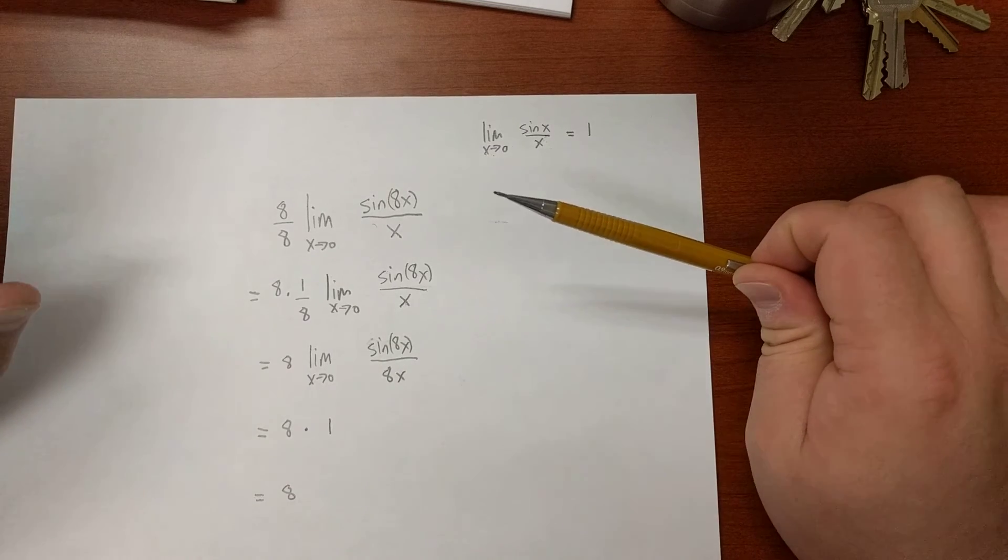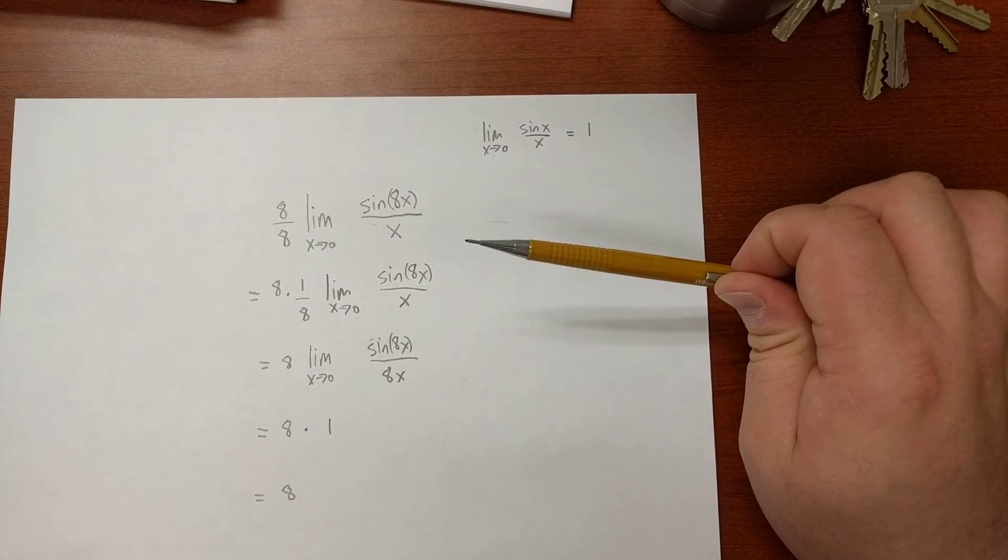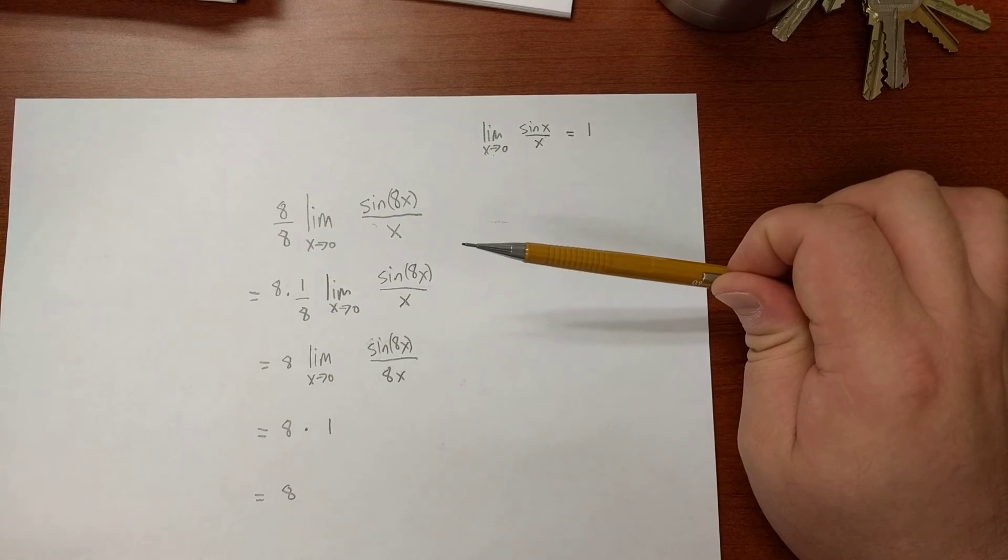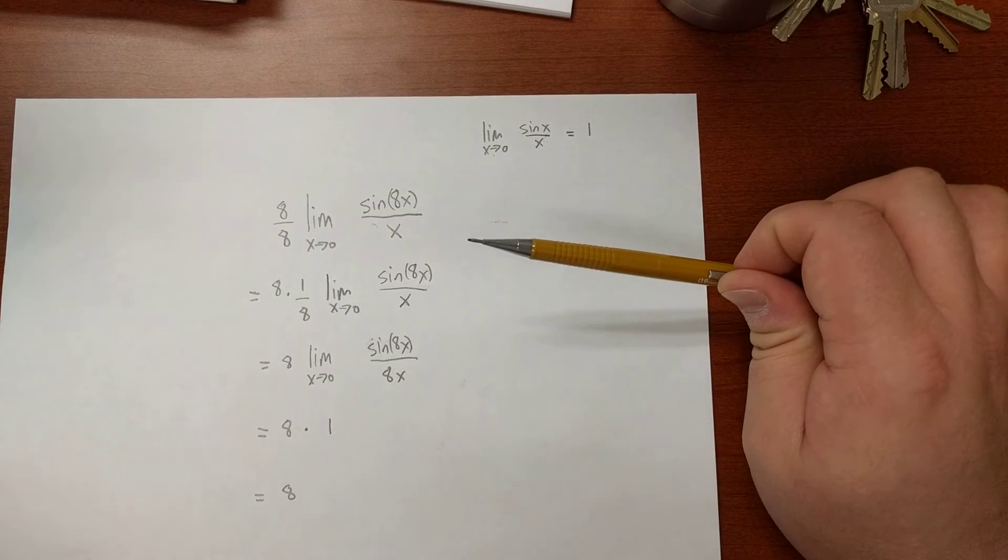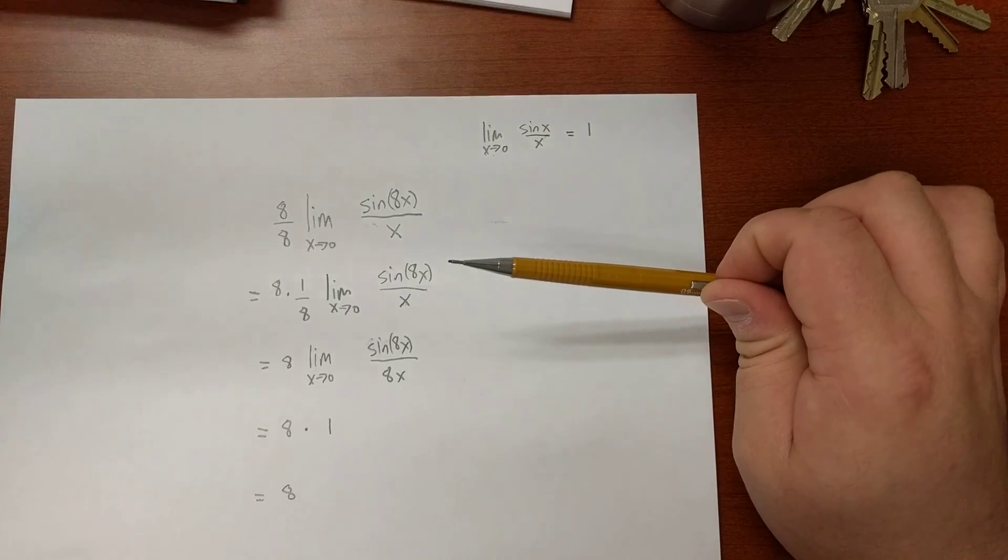So, make sure you memorize those two main ones. And as long as you know those, along with some of your properties of trig and your identities, you should be good to go. If you have any questions, let me know.